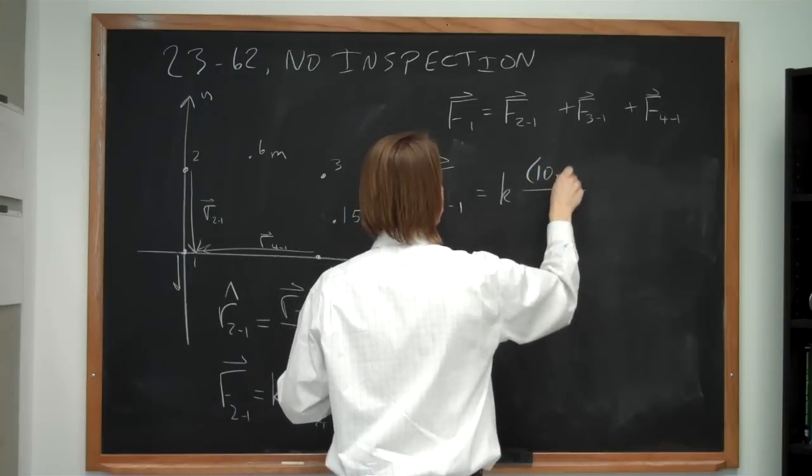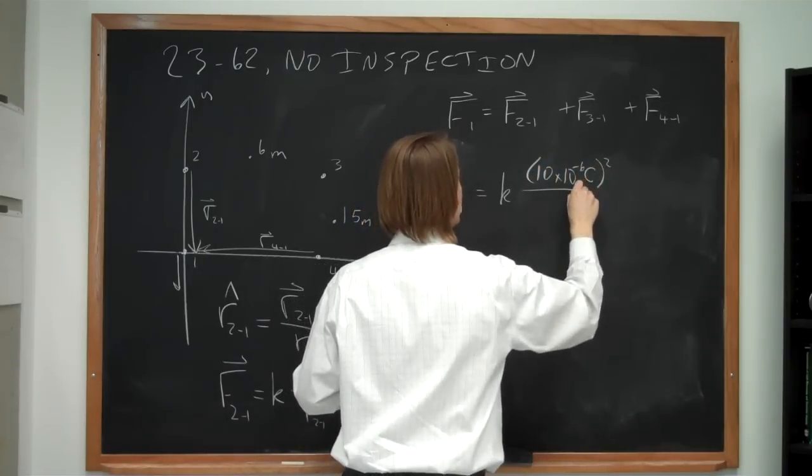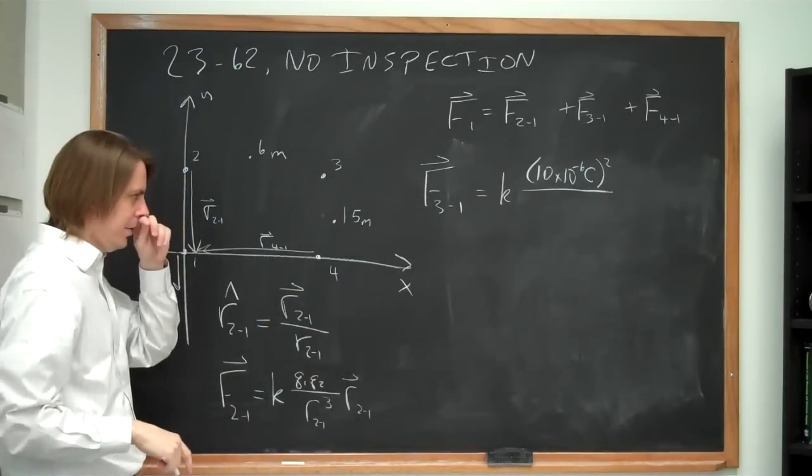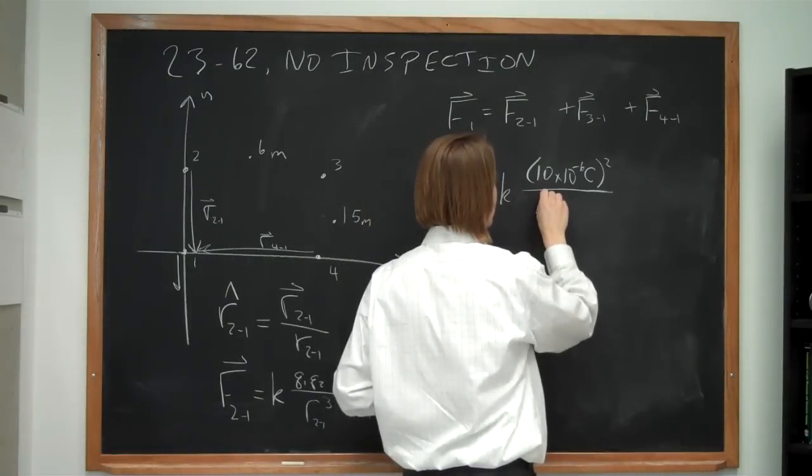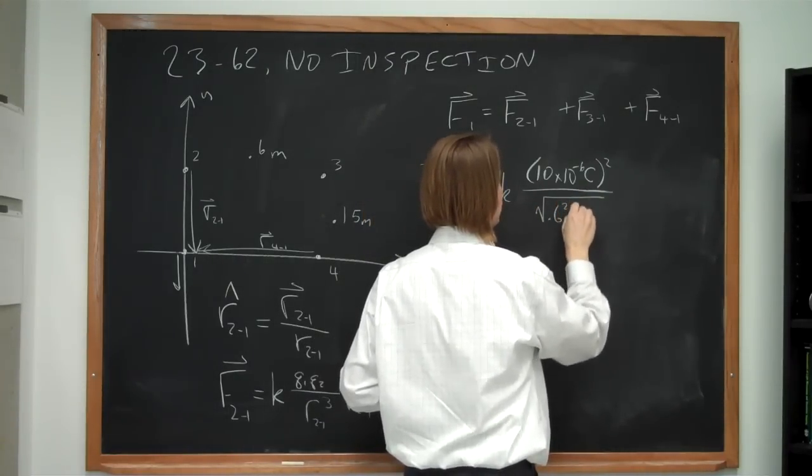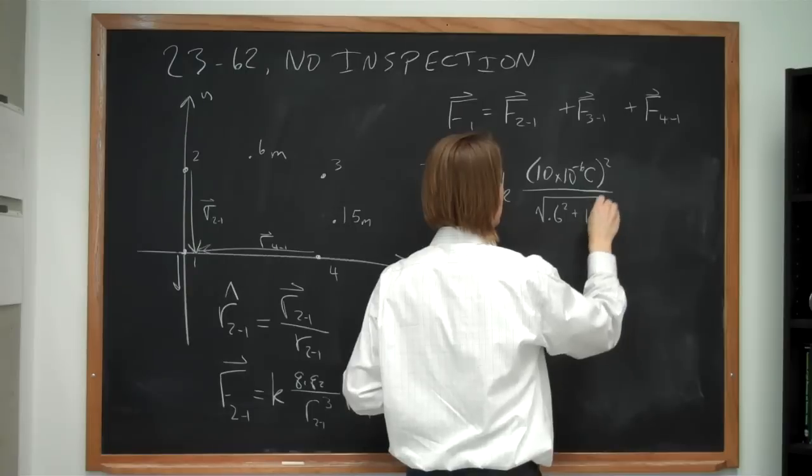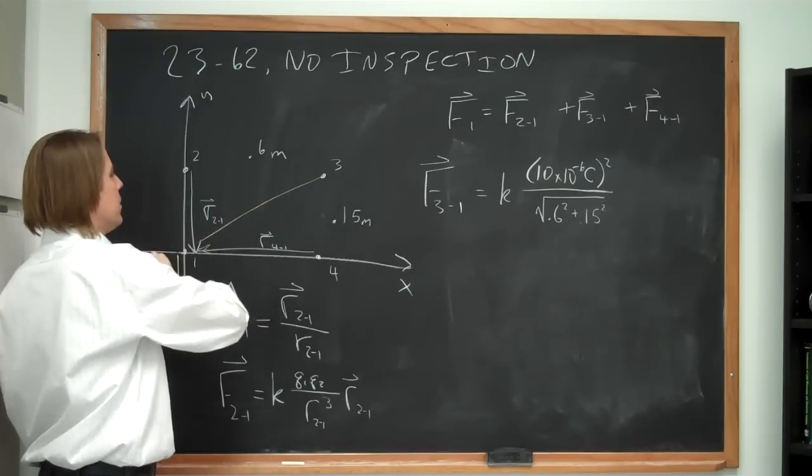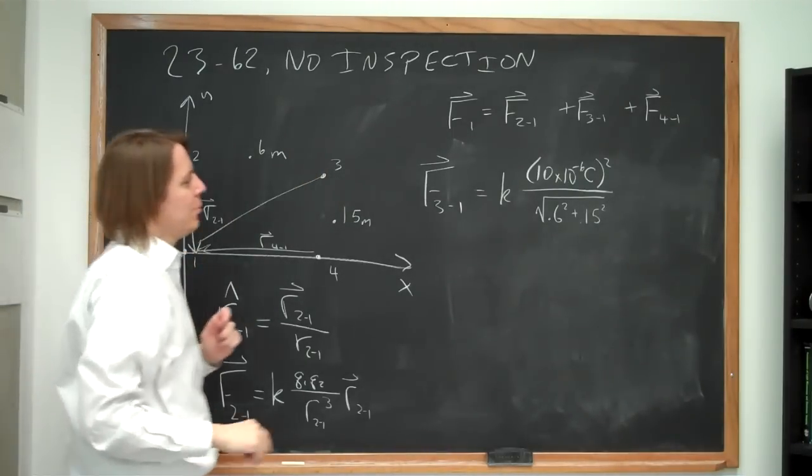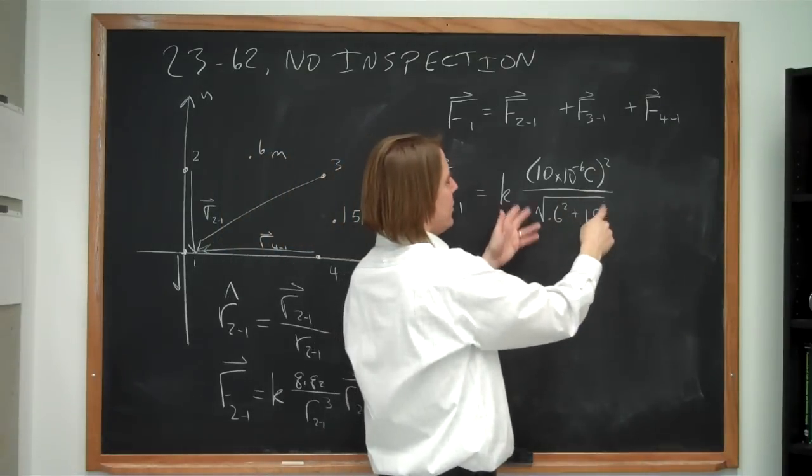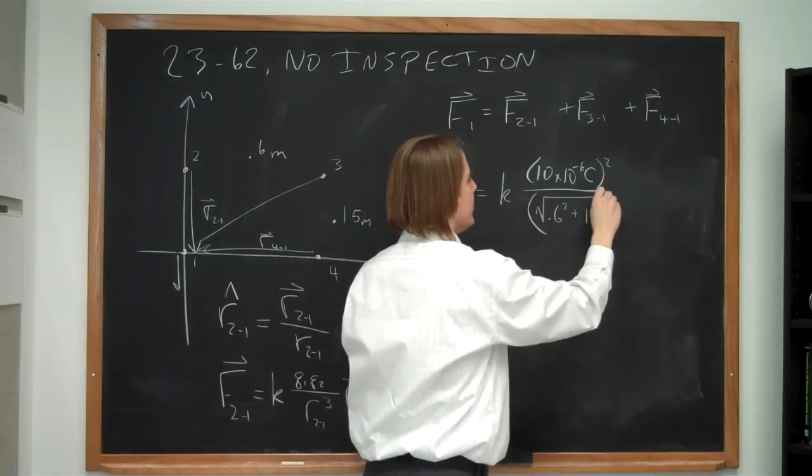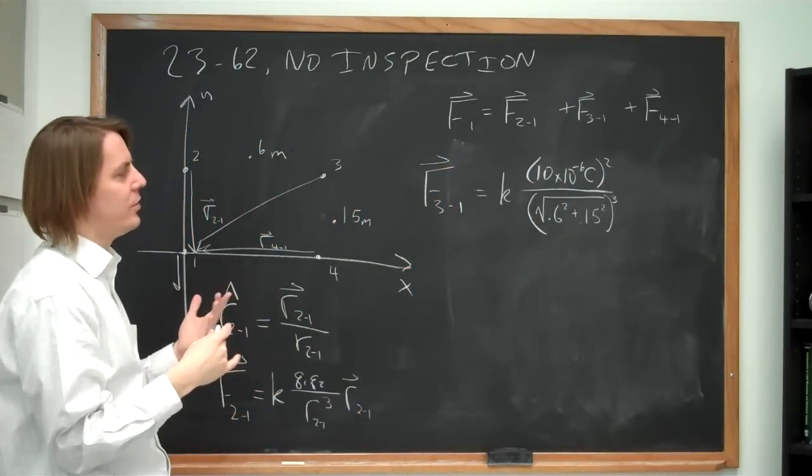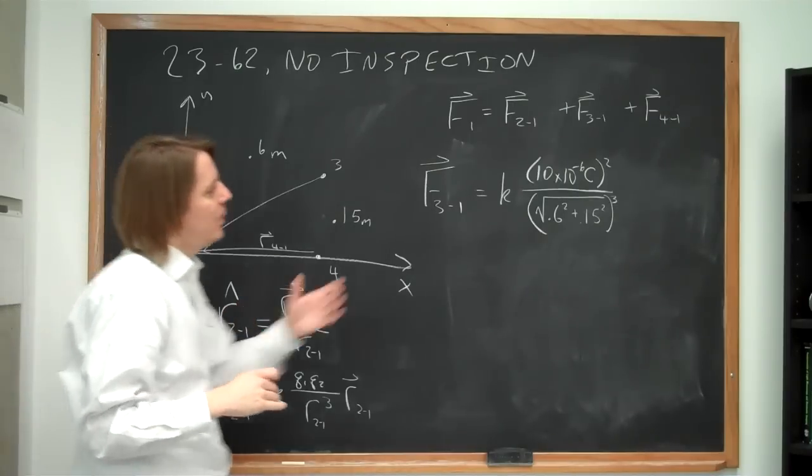So let's look at F31. K times 10 times 10 to the minus 6 coulombs squared over the distance cubed. Now what was the distance? We had to take the square root. We had to use Pythagorean theorem to get the distance. The square root of 0.6 squared plus 0.15 squared is this distance here. We have a right triangle. But then, before we squared the distance and the square root kind of canceled, now we're going to cube the distance. So it's the square root to the third power. You could also write that as to the three halves. You might see that written as the three halves. So now we have this cube.